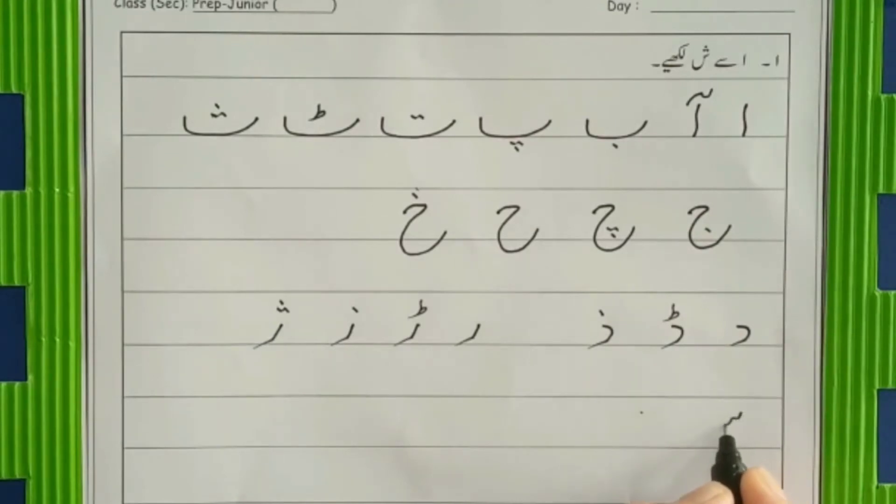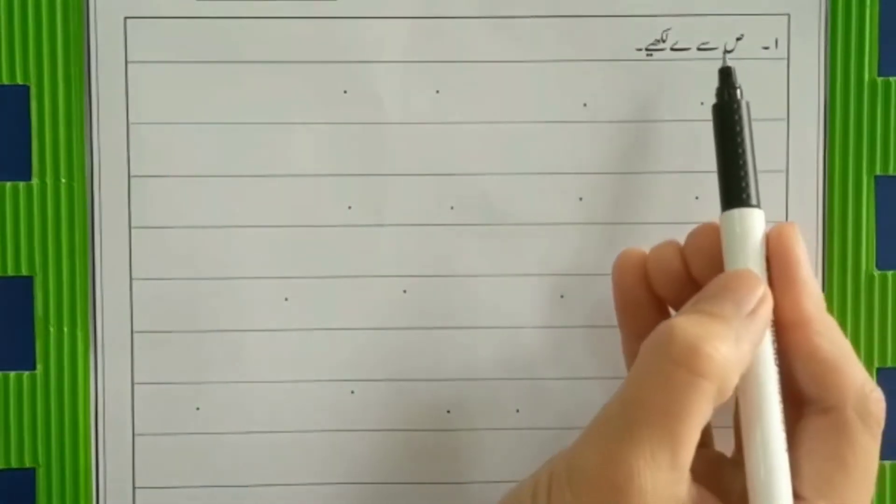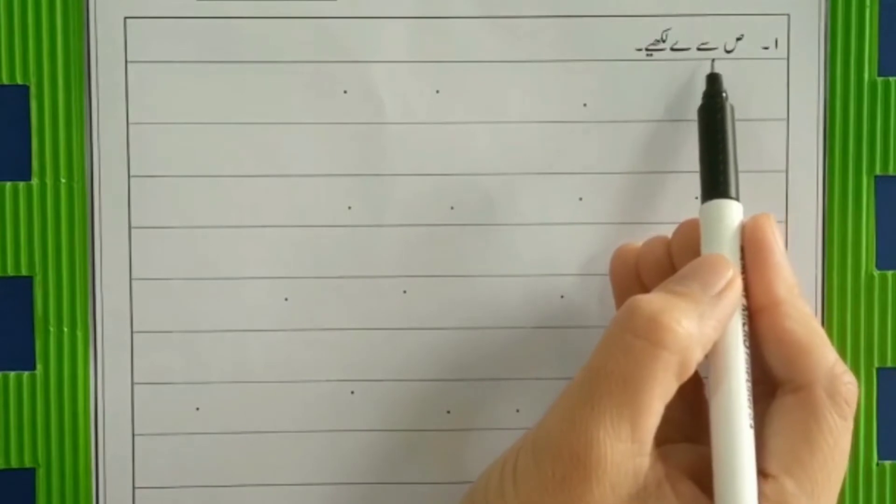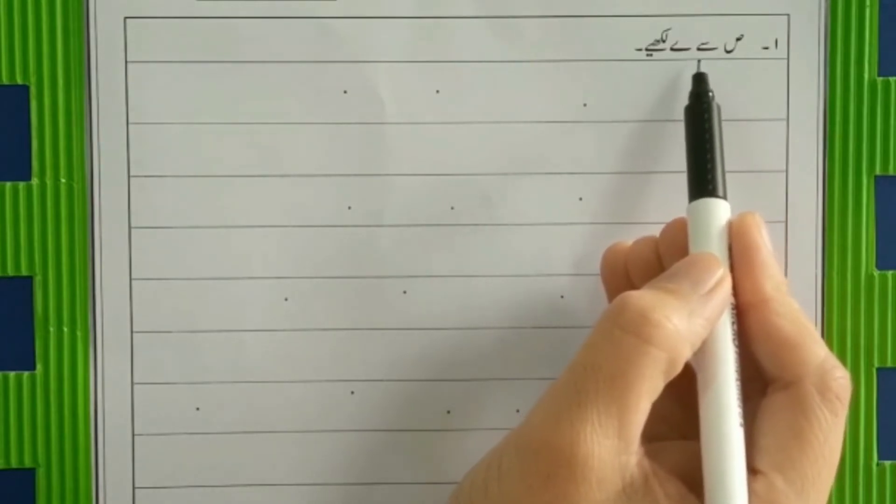Now seen, make a small curve, big curve and big belly. Seen. Sheen comes after seen. Very nice. And three dots on sheen. So we have done our first activity. Alif se sheen likhiye. According to the bracket, our first half is swat and the last one is ye. Swat se ye tak likhiye.